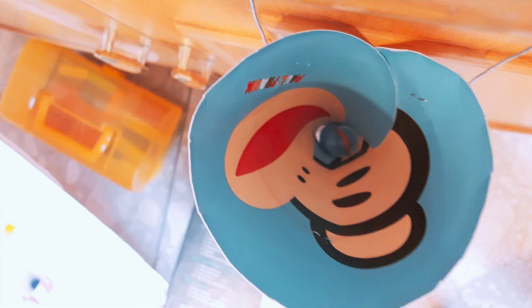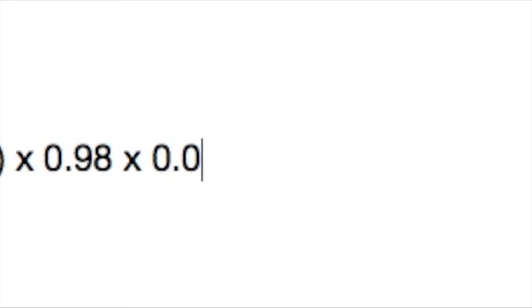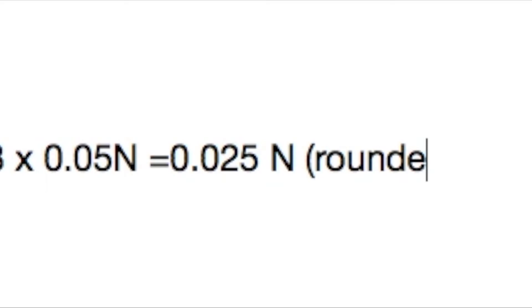Now I'm going to calculate the force and pressure of the funnel step. Inside the funnel there's already a small marble placed. When the bigger marble rolls down into the funnel, the force will cause the small marble to drop down. Force equals F = MA. For the ball to drop down: 0.5 seconds times 0.98 (gravitational force) times 0.05 newtons — which also equals 5 grams — and that equals 0.025 newtons. By the way, it is rounded up.